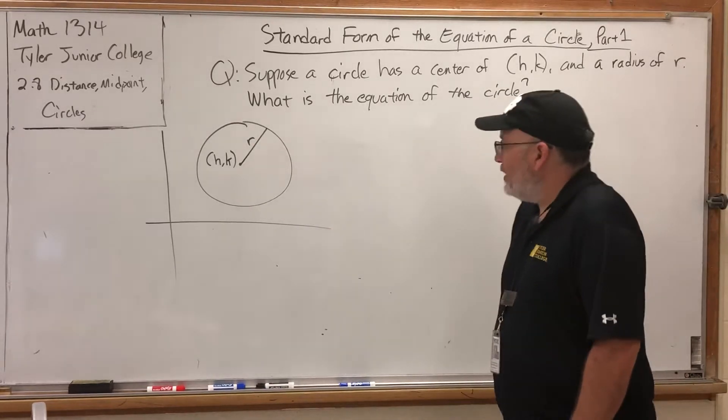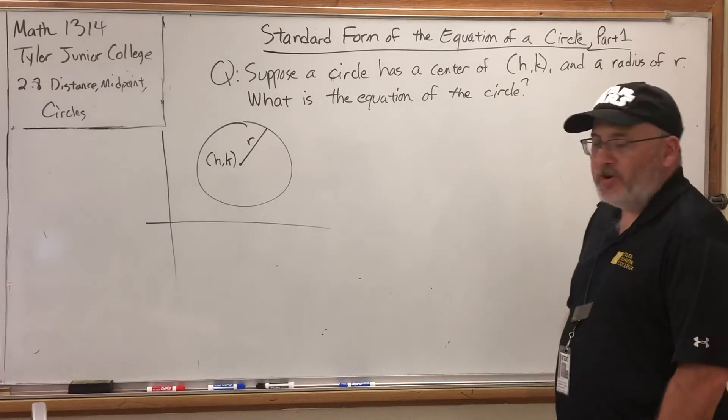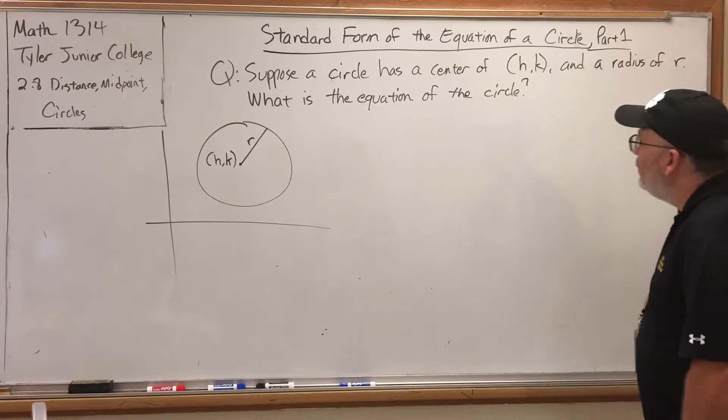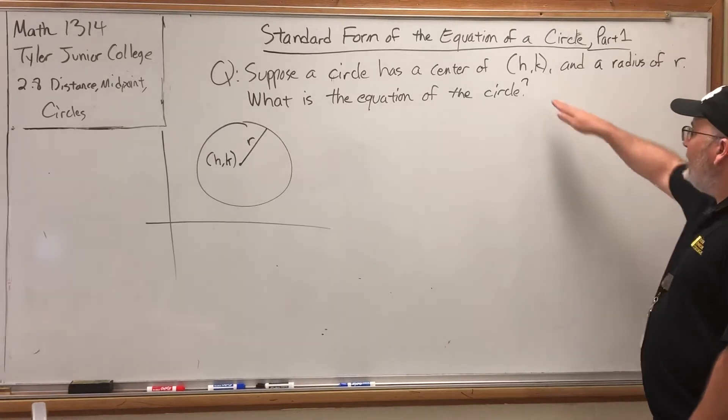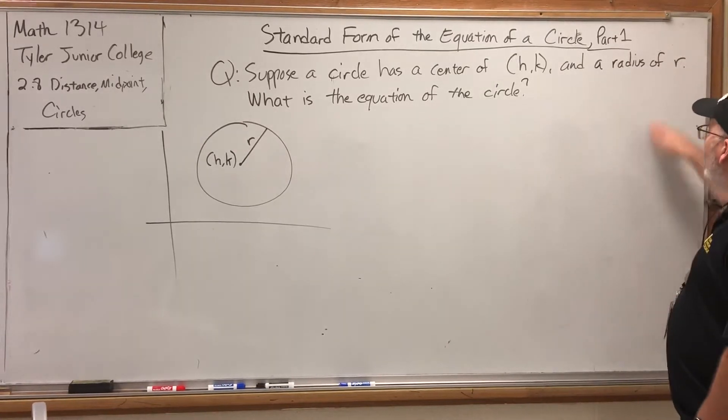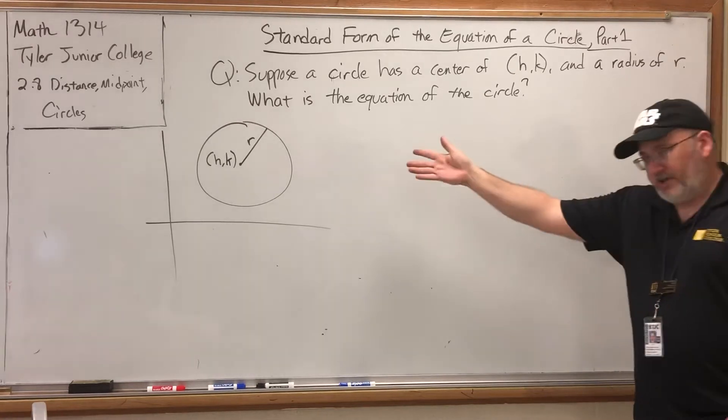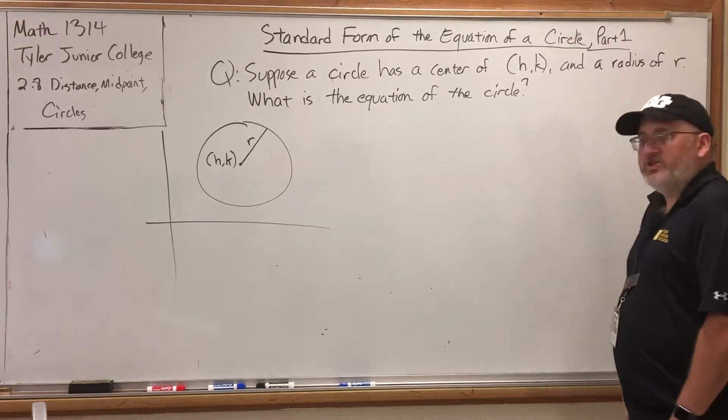So is this enough information to come up with a standard form for the equation of a circle? Suppose a circle has a center of h, k and a radius of r, as illustrated here. What is the equation of the circle?